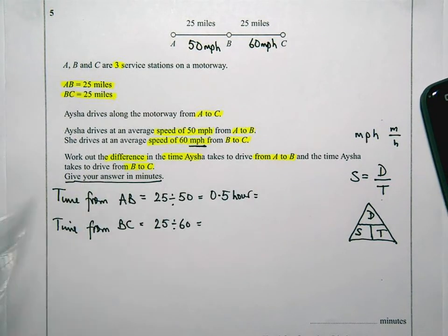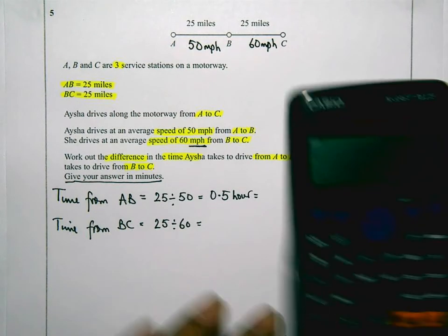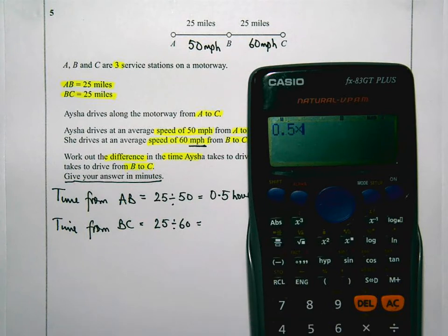So 0.5 hours. If I want to change that into minutes, 0.5 times by the 60 minutes in an hour. And that's going to give me 30. 30 minutes.